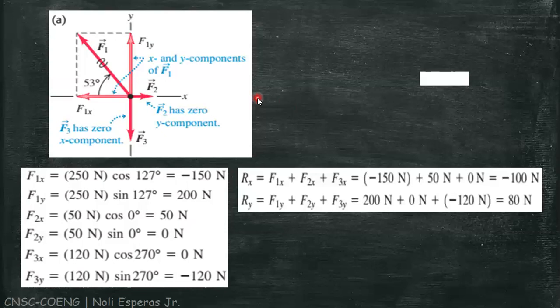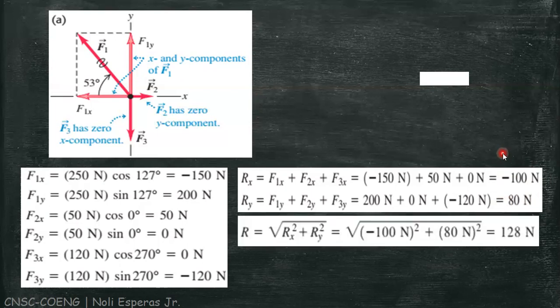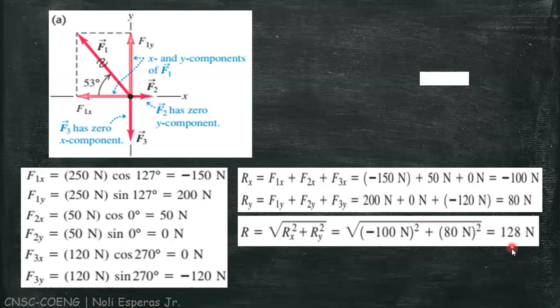Next, to solve for the x and y components of the resultant vector, we're just going to sum or add up all the x components and y components. We have the x component of the resultant vector as -100 N and for the y component we have 80 N. Then using Pythagorean theorem, we can solve for the magnitude of the resultant vector: square root of x component squared plus y component squared, we have 128 N.